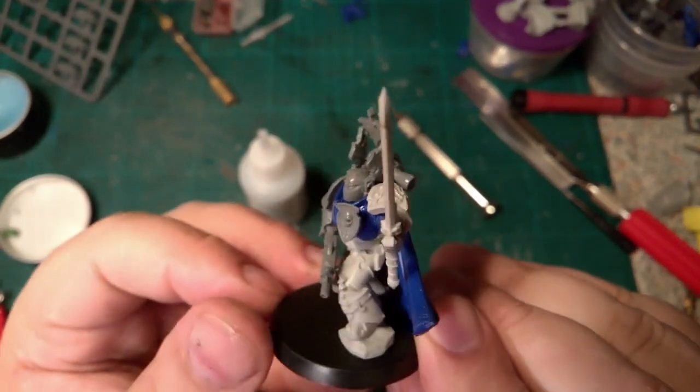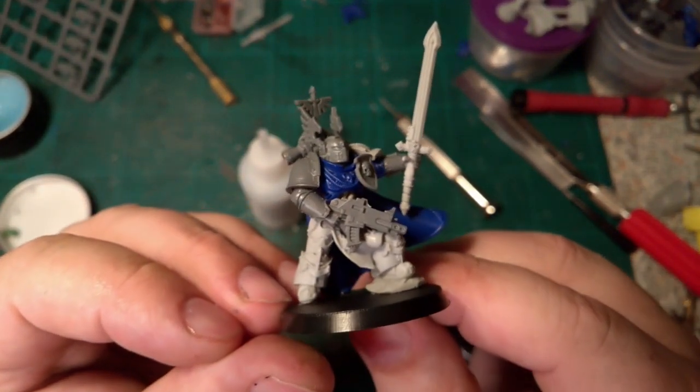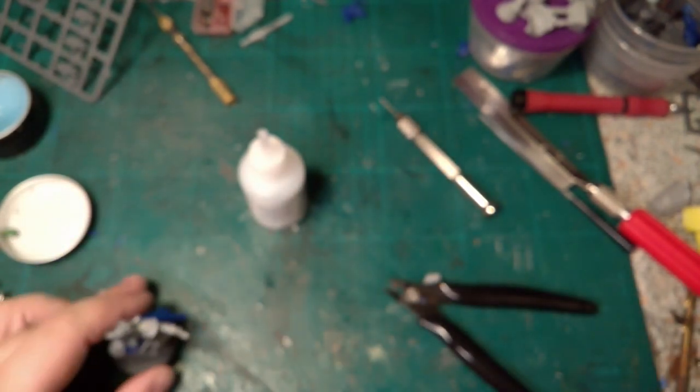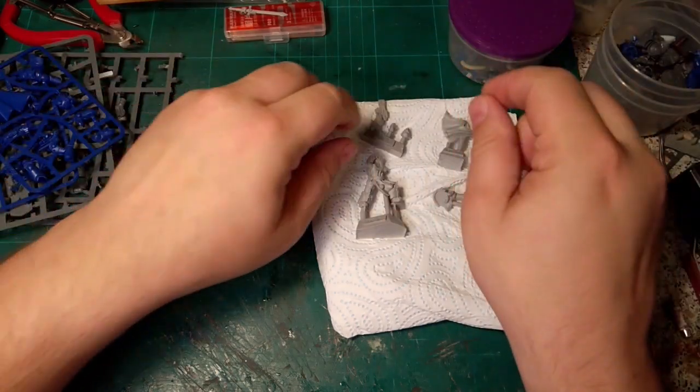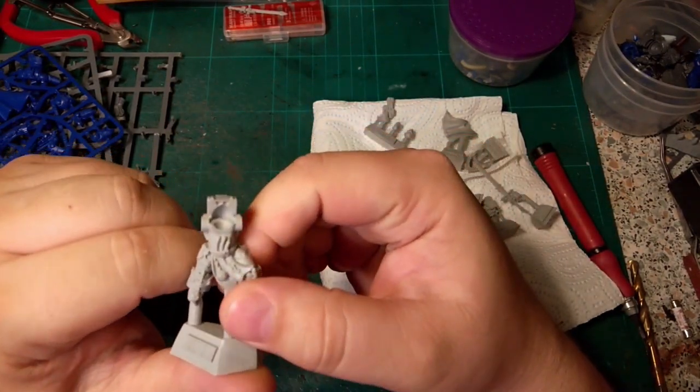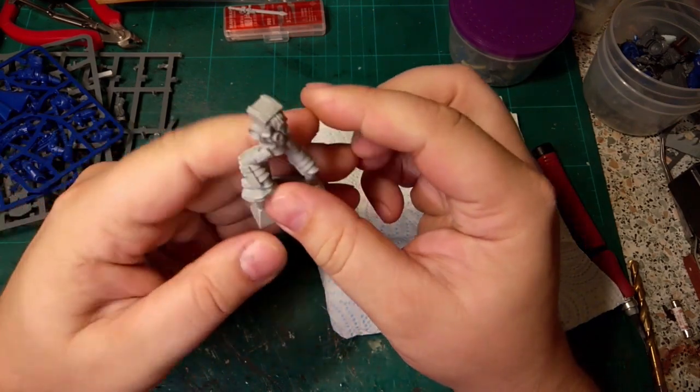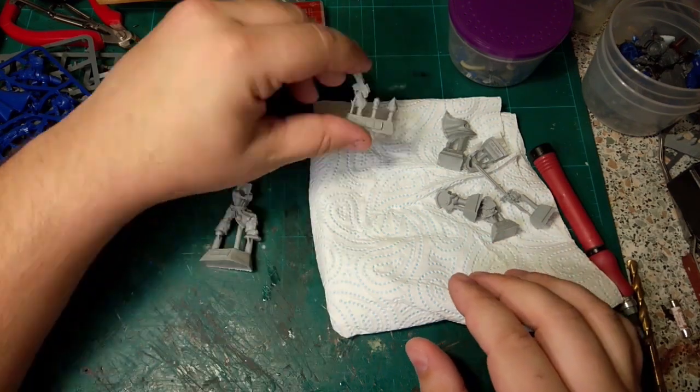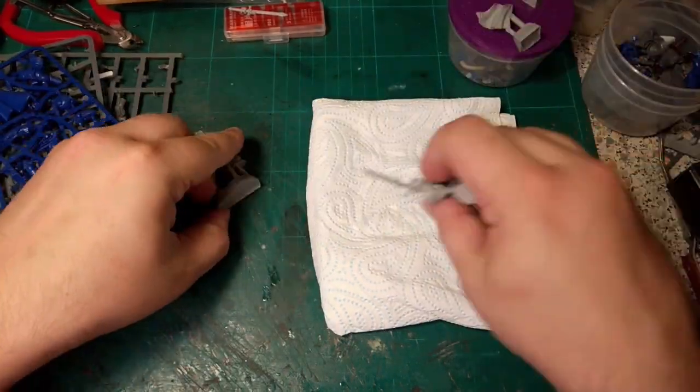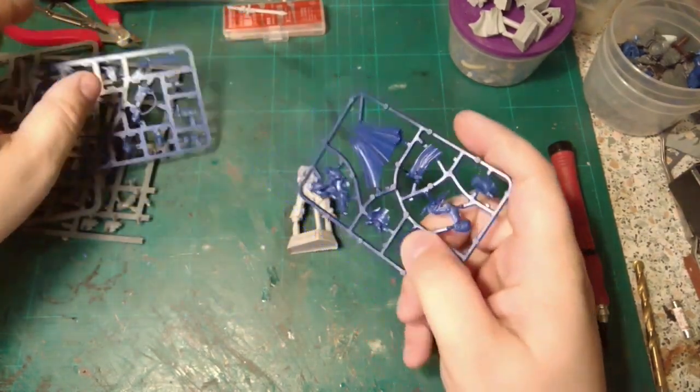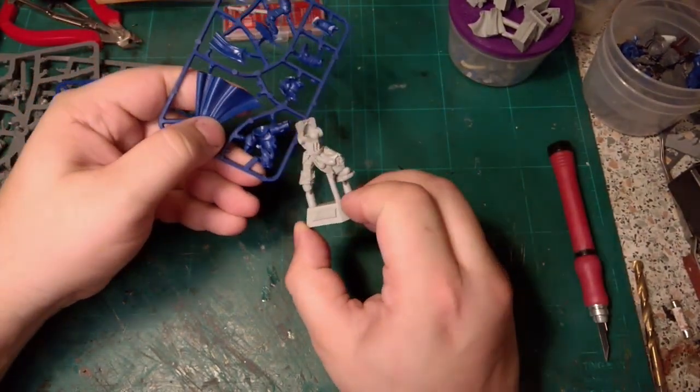Greetings, so this is a captain I kitbashed together for my Dark Angels army, and this is just a quick video on how I made it. I'm using the Terminator Praetor from Forge World with Dark Angels. It's only the legs and torso we need from this, and I'm going to be combining it with a Primaris captain.